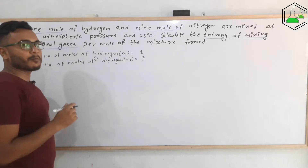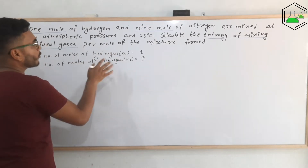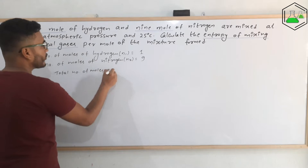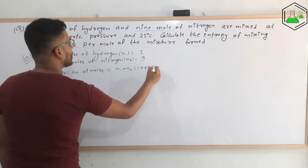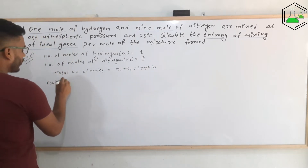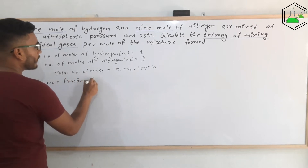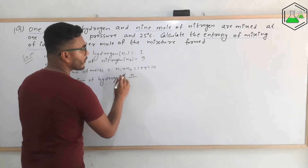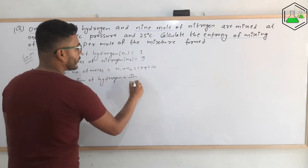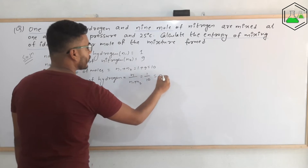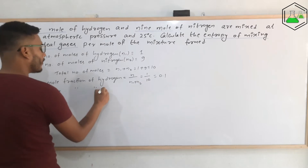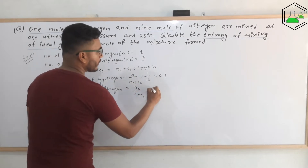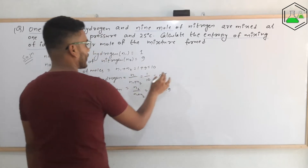Now, since we have the number of moles, we need to calculate the mole fraction. For that, we need to calculate the total number of moles, which is N₁ plus N₂ equal to 10. Mole fraction of hydrogen is N₁ divided by N₁ plus N₂, which is 1 by 10, equal to 0.1. Similarly, mole fraction of nitrogen is N₂ divided by N₁ plus N₂, which is 9 by 10, equal to 0.9.